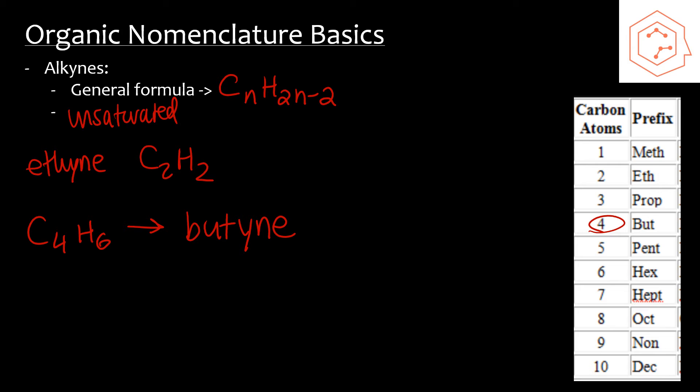Now let's think about how each of these structures would look. Methane obviously looks like this. Ethene looks like this, and ethyne looks like this. This is an alkane, this is an alkene, and this is an alkyne.